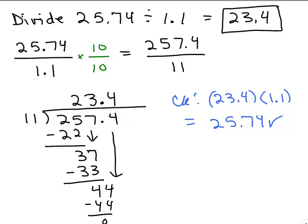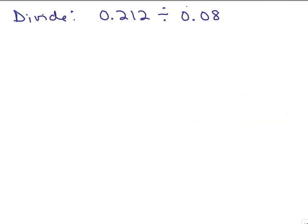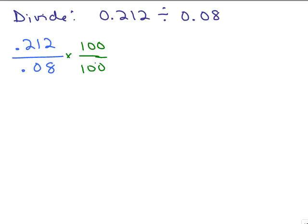Let's look at another problem. We have 0.212 divided by 0.08, which we can write as a fraction. How can I make this a whole number in the denominator? Not 10, because that would only move it over one place — you need to multiply by 100. Multiplying numerator and denominator by 100 moves the decimal 2 places to the right in the numerator, giving 21.2, and in the denominator giving 8. Now we can do the division since we're dividing by a whole number.